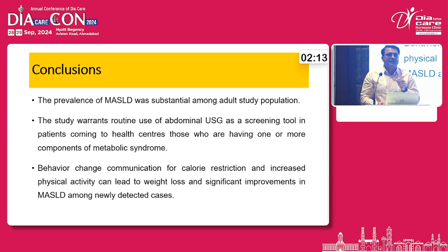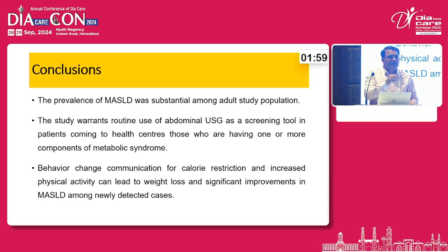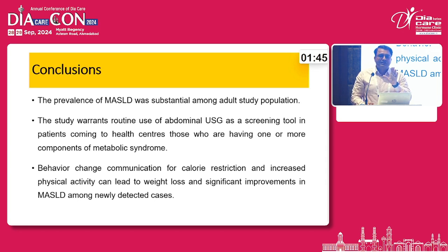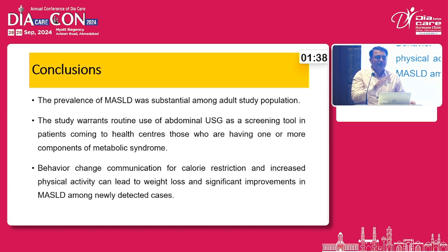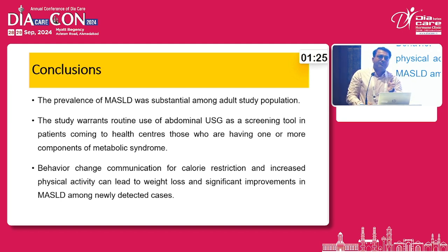The key message is: whenever a patient comes to you for any reason, we tend to order USG only when they report a specific complaint — 'koi pedardh batayega tabhi USG karwate hai.' Even radiologists note fatty liver only as an incidental finding for pain abdomen. But whenever a patient presents with any cardiometabolic risk factor — increased waist circumference, pre-diabetes, hypertension, or medication for hypertension — make them undergo USG. In primary care settings, you can also use the FIB-4 index: if above 2.67, refer to gastroenterology or hepatology; between 1.3 and 2.67, arrange transient elastography; below 1.3, continue monitoring.